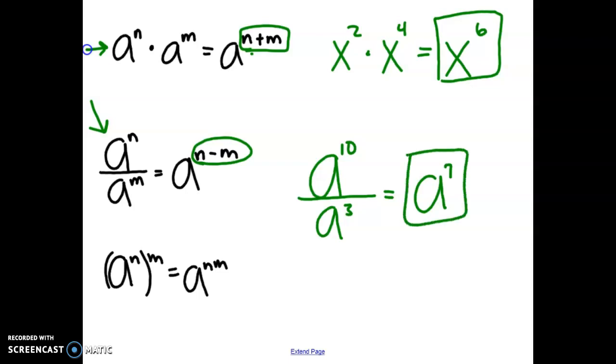And the last property we learned about is what if we have an exponent raised to another exponent? We call it power of a power rule, and what we do with this one is that we multiply the exponents together. So if I have b squared raised to the fourth power, two times four will give me b to the eighth power.